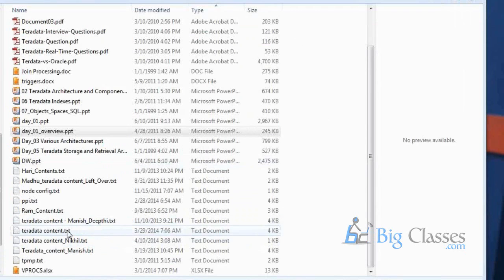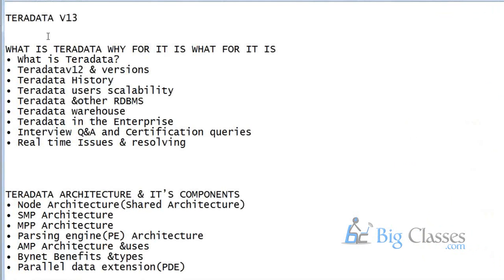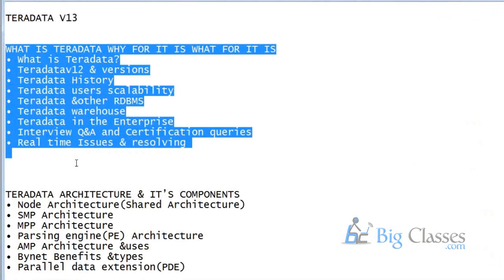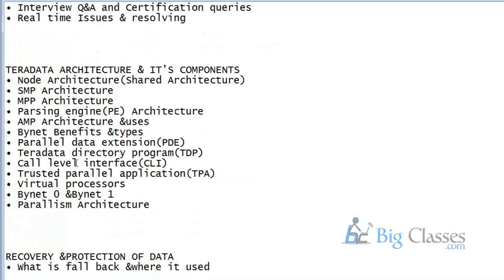From the Teradata course content perspective, we will first discuss the history of Teradata and the basic interaction of Teradata architecture, then the internal components — how they work and behave, what the parsing engine contains and its functionality. Teradata can run in a single node (SMP — Symmetric Multiprocessor) or multi-node (MPP — Massive Parallel Processing) configuration.